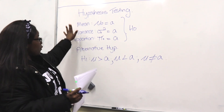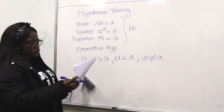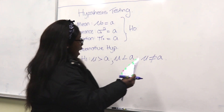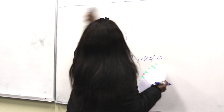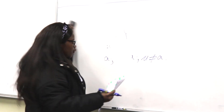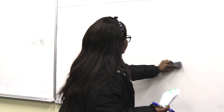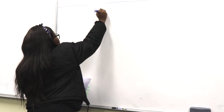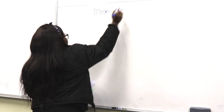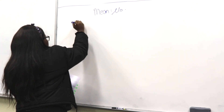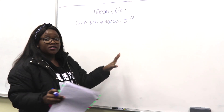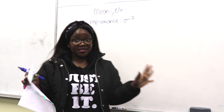There are three different types of tests: for the mean, variance, and proportion. I'm going to start with testing for the mean. With the mean, there are two types — one where they give you the population variance, and one where they don't. Let's go through the six steps in hypothesis testing.